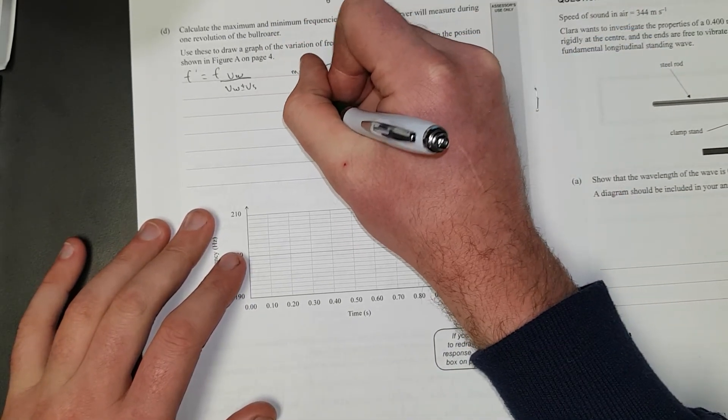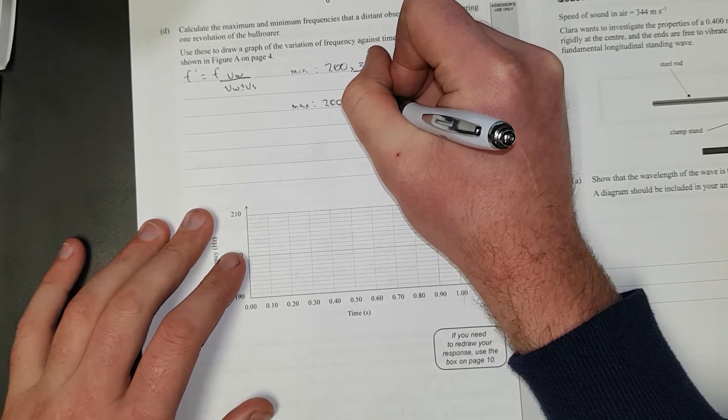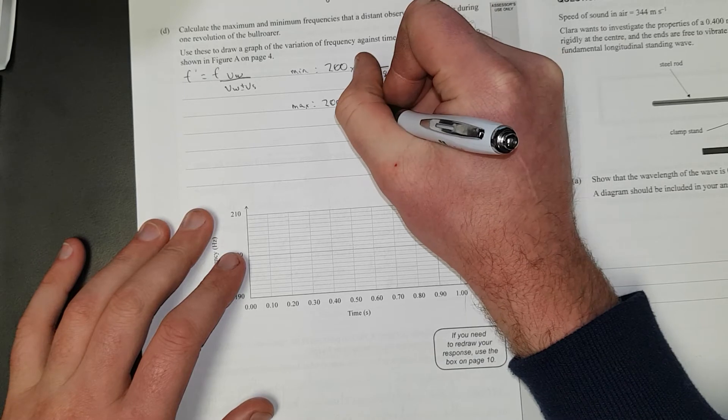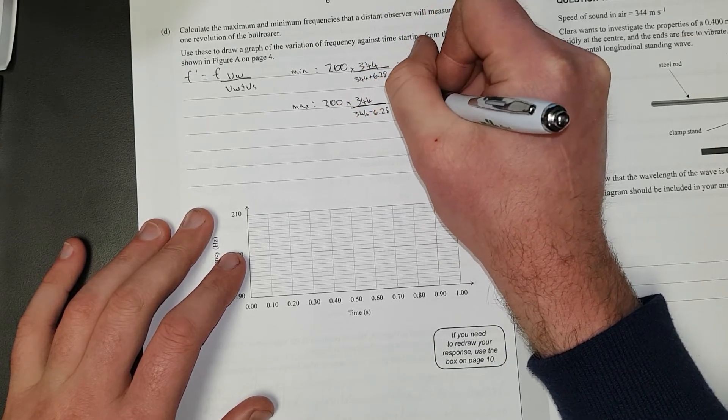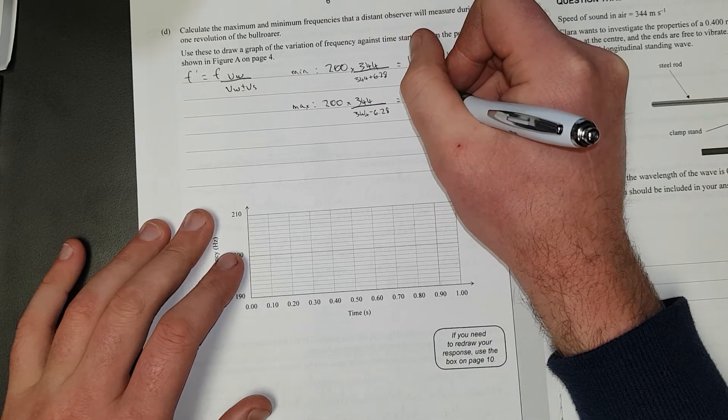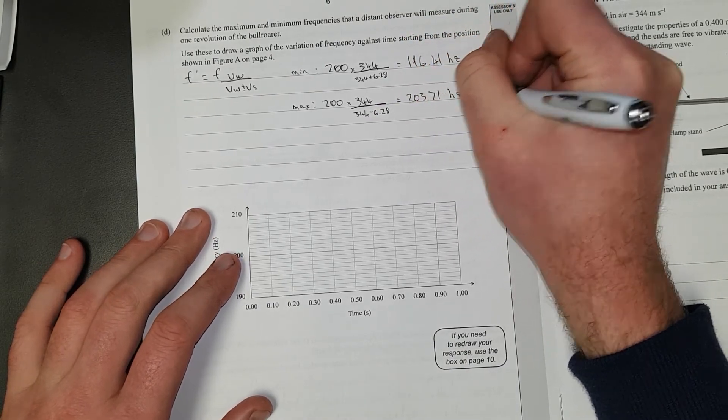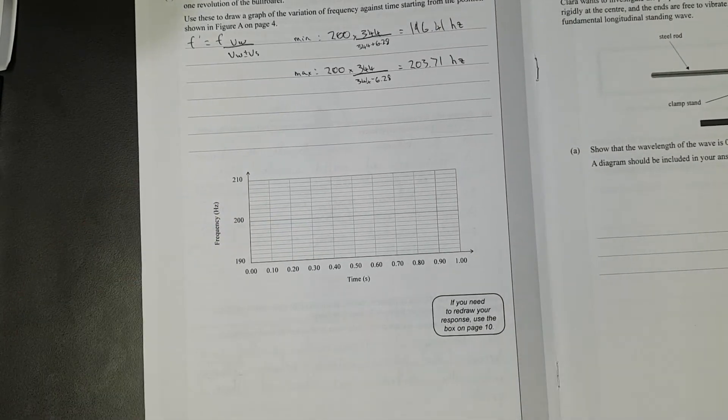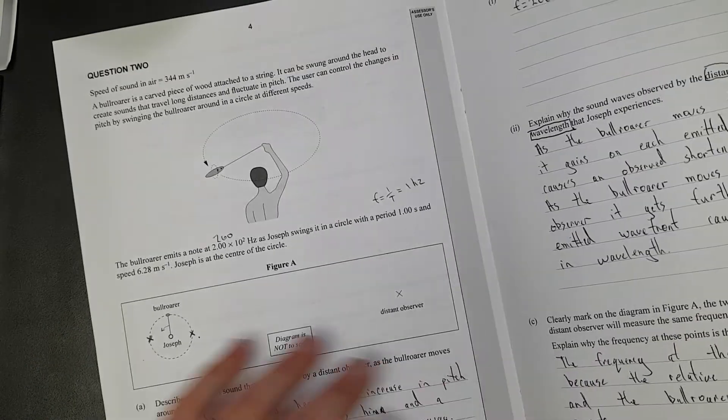Max is going to be equal to 200 times 344 divided by 344 minus 6.28. And that is going to give me 203.71 hertz. Bada boom. Got a merit. If I want to get excellence, I need to turn the page and figure out what the picture is telling me.